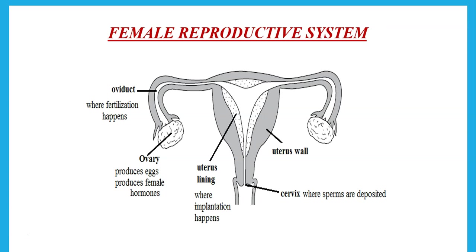The female reproductive system is made up of two ovaries. Each ovary produces eggs and produces the female hormones. Attached to the ovaries there are two oviducts, and the oviduct is where fertilization happens. When the ovary releases an egg, the egg stays in the oviduct for a day or two.